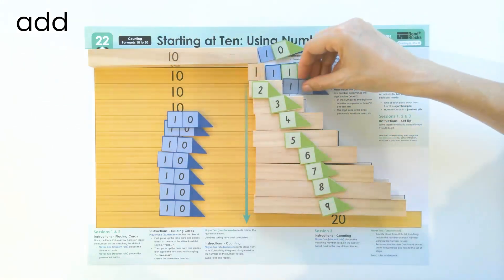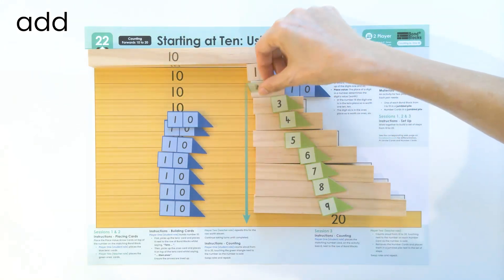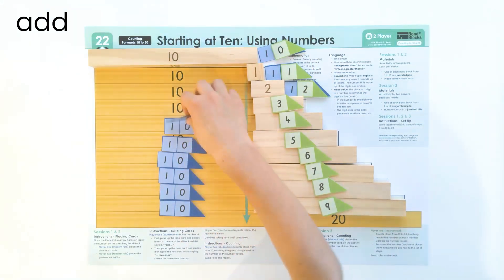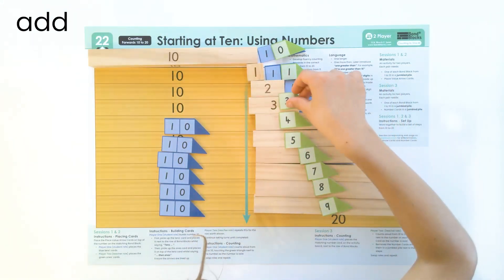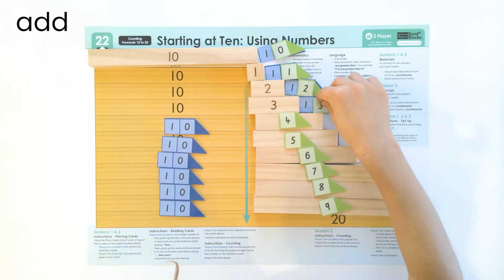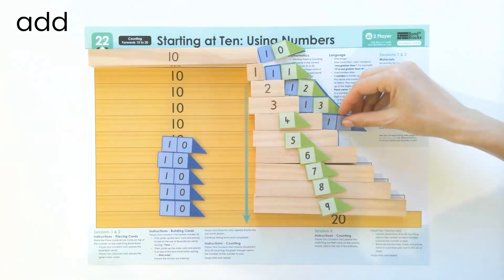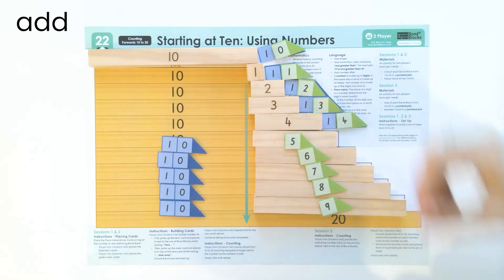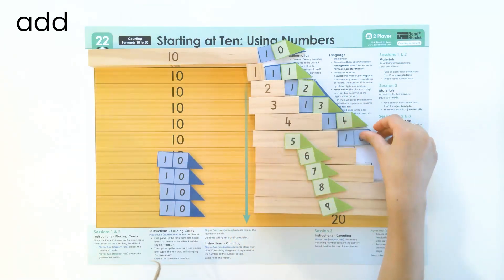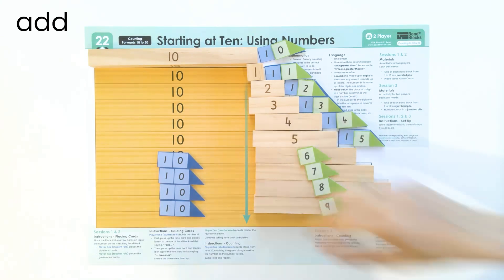Ten, add two is twelve. Ten, add three is thirteen. Well done. Ten, add four is fourteen. Ten, add five is fifteen. Lovely saying.